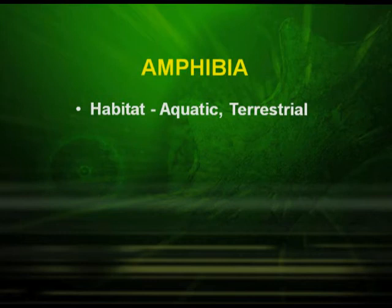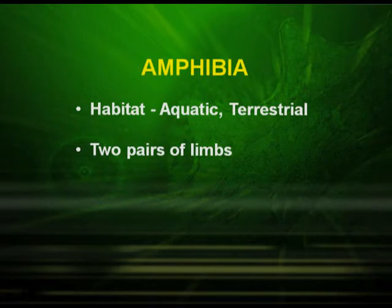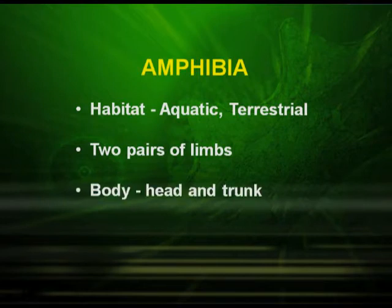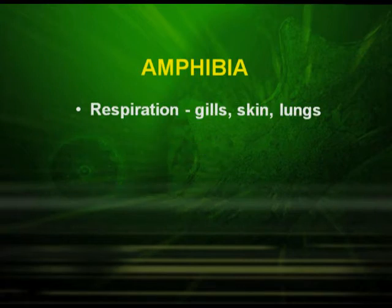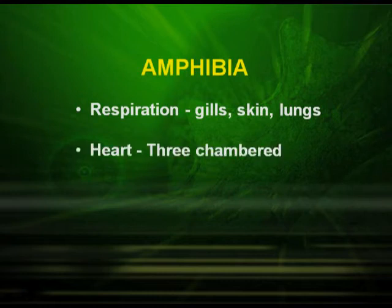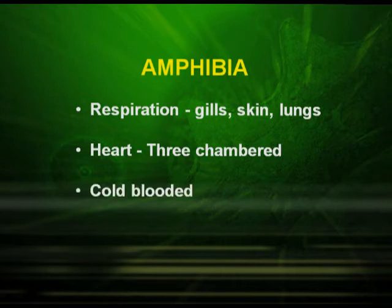Amphibia are found in aquatic as well as terrestrial habitat. There is presence of two pairs of limbs and their body is divided into head and trunk. Respiration is either by gills, skin, or lungs. In Amphibia, the heart is three-chambered and they are cold-blooded animals.